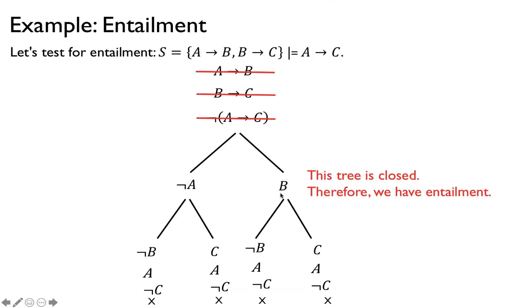All of those paths are closed, so the tree is closed and we do have entailment. By the way, at the point where we had B and not-B, we could have stopped that branch early since there's already a contradiction. This leads to a useful tip: it's actually better to do non-branching rules first, so that we don't have as many branches to work with. That way we simplify the tree earlier.